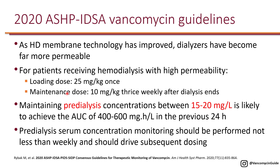For patients receiving hemodialysis, the guideline recommends a loading dose of 25 mg/kg one time based on total body weight, and then a maintenance dose of 10 mg/kg three times per week. This is because intermittent hemodialysis is typically done three times a week — either Monday/Wednesday/Friday or Tuesday/Thursday/Saturday. This maintenance dose is given after dialysis is done, and the guideline does recommend getting a pre-dialysis level rather than a post-dialysis level.